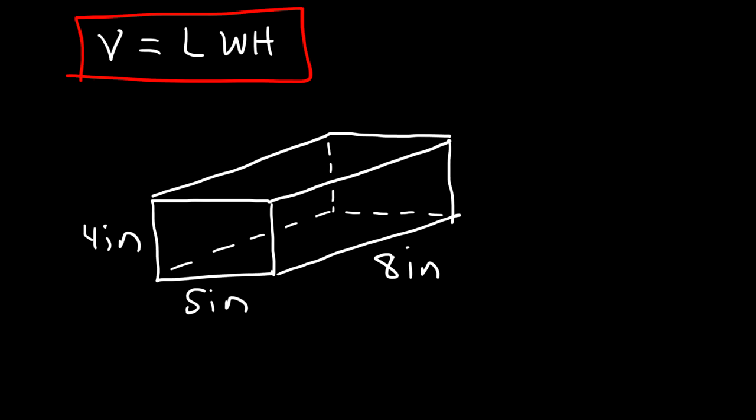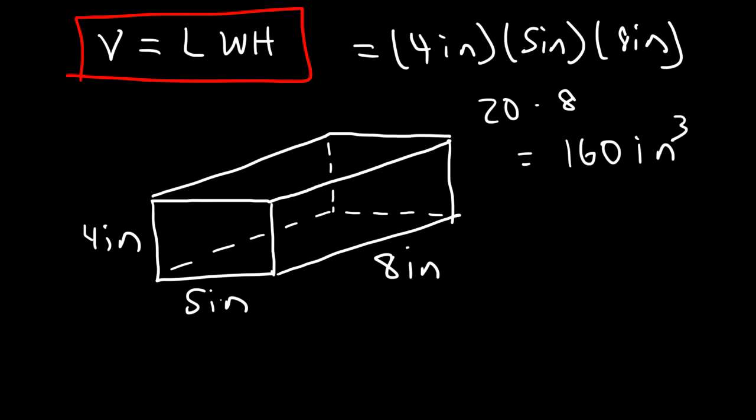Now what do you think the units will be for this example? If you multiply inches three times, you're gonna get inches cubed. 4 times 5 is 20, and 20 times 8 is 160, so it's 160 cubic inches. And that's a simple way in which you can calculate the volume of a rectangular prism.